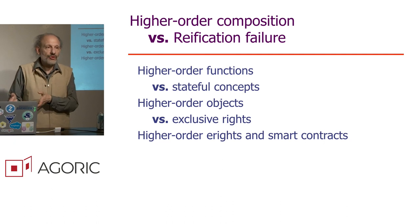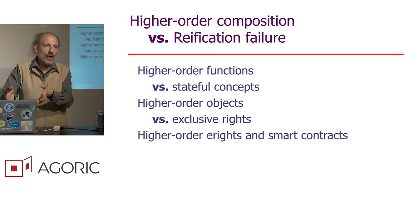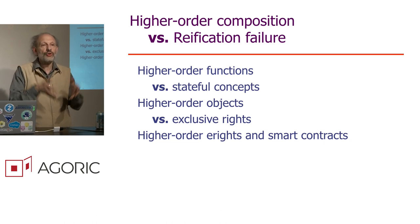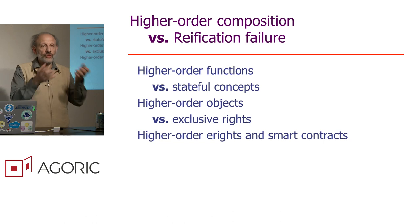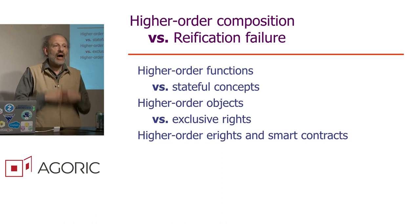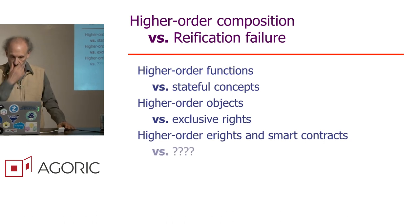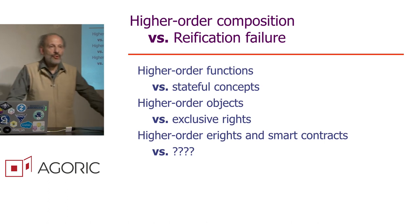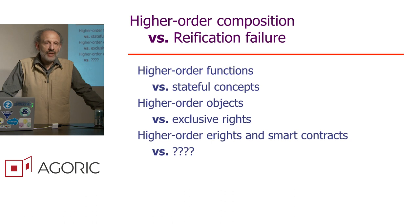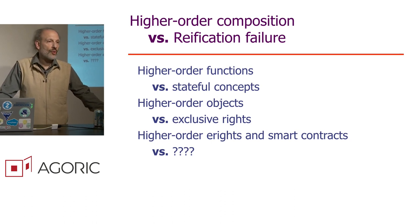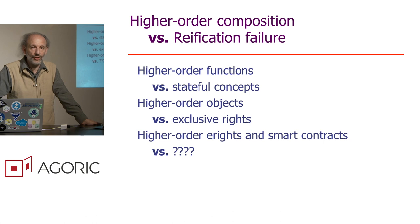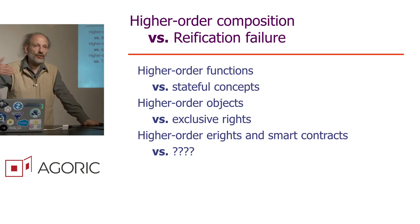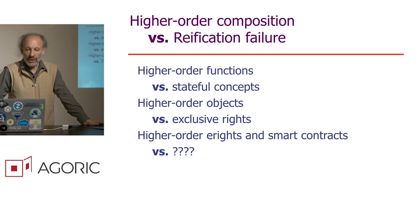Without this higher-order composition, we're not going to reproduce the richness of the real world's market institutions. Where we have had higher-order composition — functions and objects — we have seen in the computer world a richness of composition. Where we have not seen it in the existing world of blockchain and smart contracts, we have not seen deep networks of cooperation. With proper humbleness, we should understand that we're probably taking a step that will also at some point run into a reification failure, and there will be a need to create a pattern at this level that yields yet another level of abstraction.